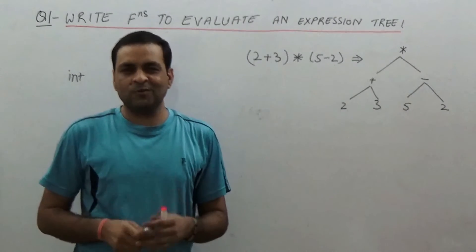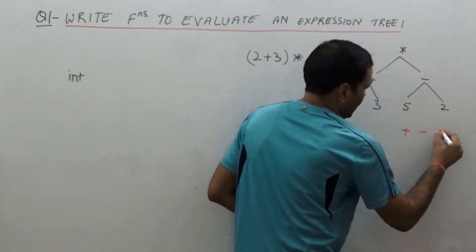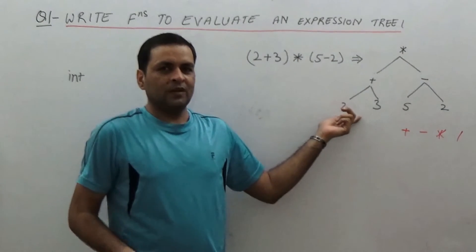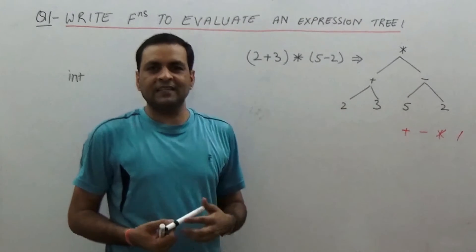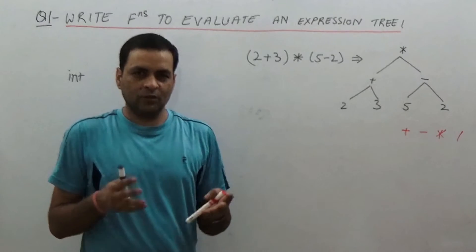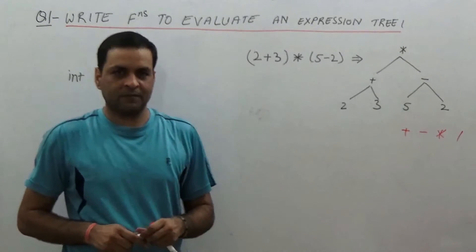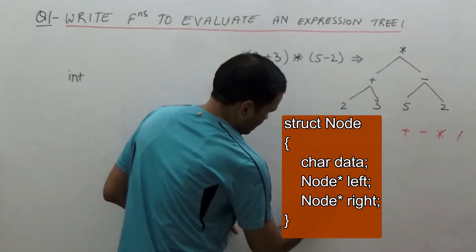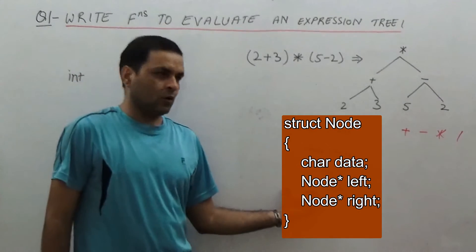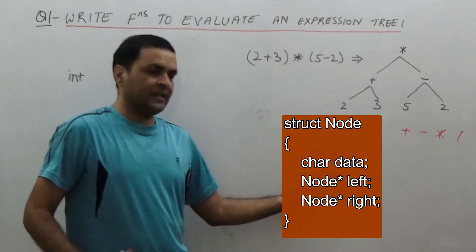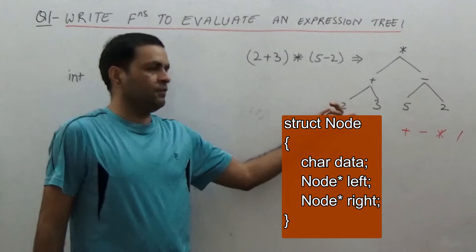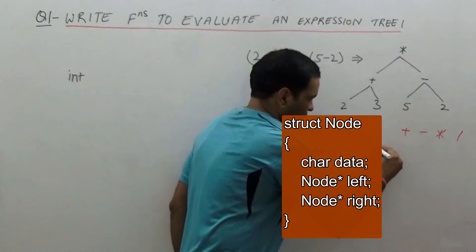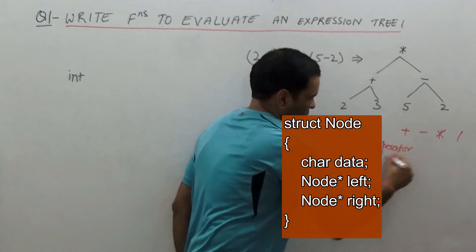For simplicity, let us assume that only four operators are allowed: plus, minus, multiplication, and divide. Let us also assume that all operands are single-digit integers, so that we can have a uniform structure for the node. Each node has a data field which is a character, and left and right pointers which are null for leaf nodes and non-null for non-leaf nodes. The character data can be either an operator or an operand.